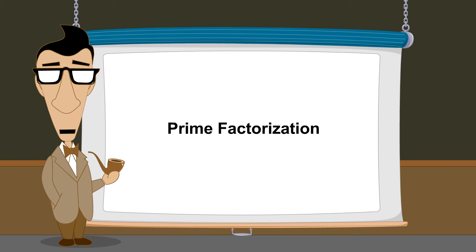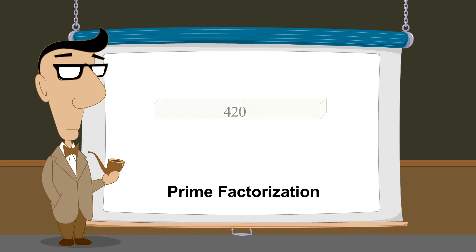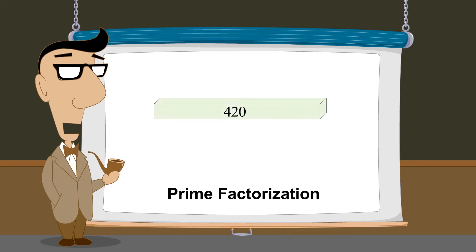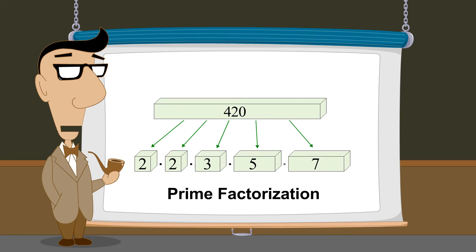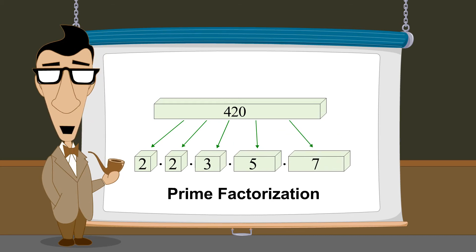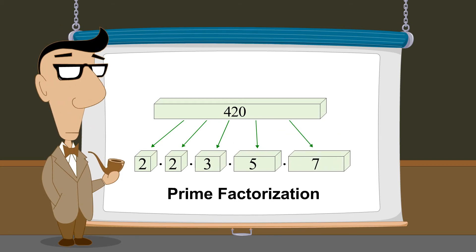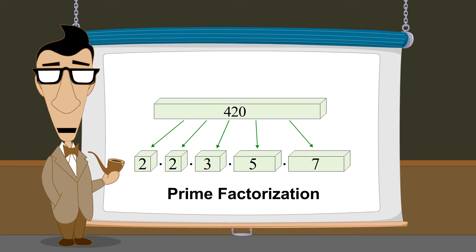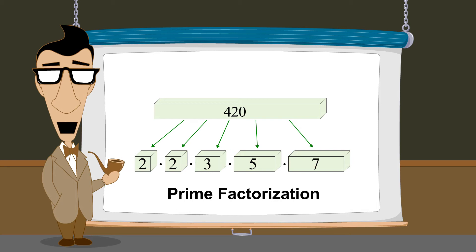Prime factorization is the key to finding the least common denominator of two or more fractions. Recall from our lecture on factoring that this involves finding all the prime numbers which, when multiplied together, produce the number that we wish to factor. Prime factorization allows us to break down each denominator into its basic building blocks of prime factors so that we can see how to create the smallest possible common denominator.